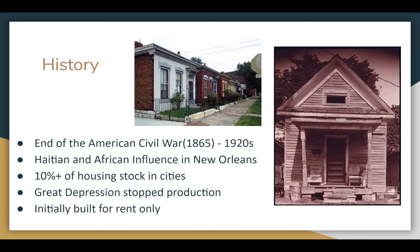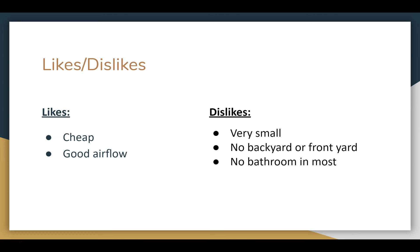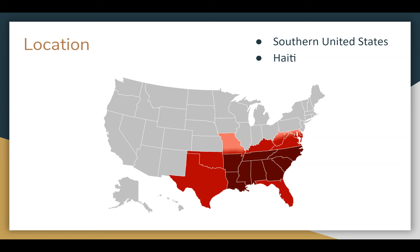After the Great Depression, people couldn't really afford them anymore, so they kind of stopped being built. Originally they were built for rent only — workers could rent a house near factories for a couple months and then leave — but people started owning them over time. I like that they were cheap and that there's good airflow, which is useful since the South is really hot. I don't like that they're very small — there's usually not even a bathroom and no backyard or front yard.